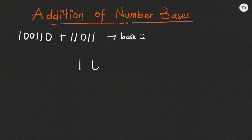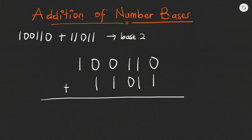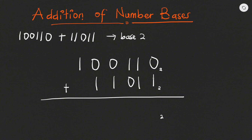So I have 100110 then I have 11011 — I'm supposed to add. Remember we are adding in base two, so let me write it small over here: base two is our final answer base. Adding from the right to the left as usual, zero at the top plus the one at the bottom will give me one.